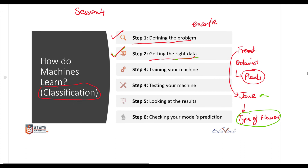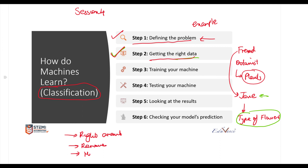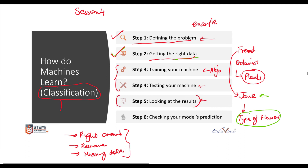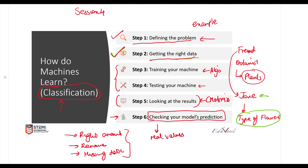Let us quickly summarize. To train a machine we divided the process into six steps: step one, define the problem — identify flower type based on sepal length, sepal width, petal length, and petal width; step two, get the right data and clean it by removing irrelevant parameters and missing data; step three and four, train and test the machine using an algorithm; step five, look at the results using the confusion matrix; and step six, check the model's prediction by entering real values. I hope this lecture was clear — I'll see you in the next one!